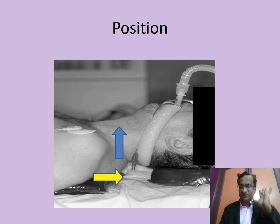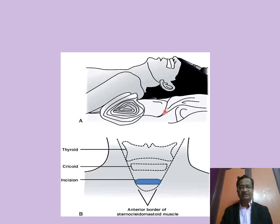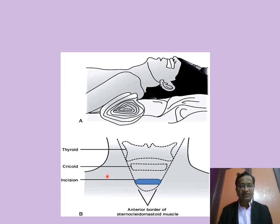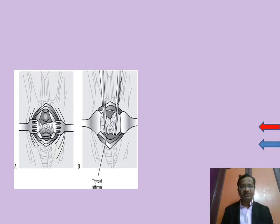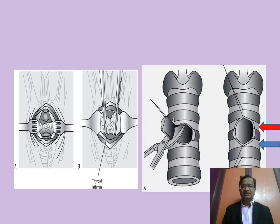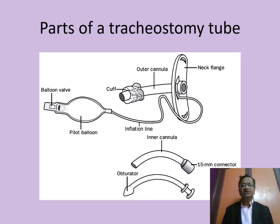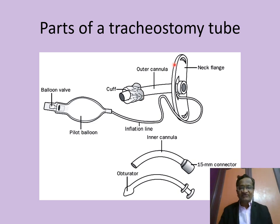This is the position for tracheostomy. The incision is around the second to third tracheal ring, just anterior to the bottom of the sternocleidomastoid — this is a low tracheostomy if you go a little lower. Open up through the thyroid isthmus, cut the trachea, and introduce the tracheostomy tube into the trachea.